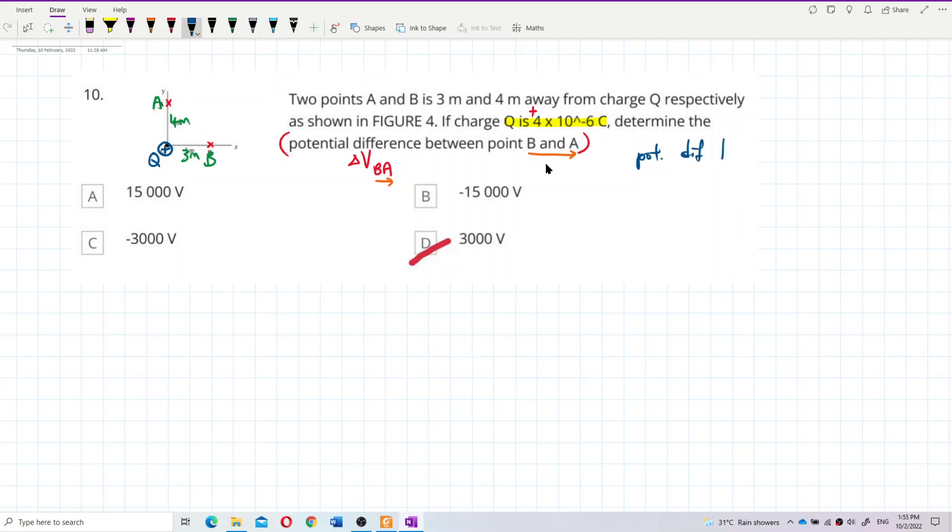If the question asks for potential difference between A and B, then you write delta V_AB. If potential difference between B and A, then you write delta V_BA.